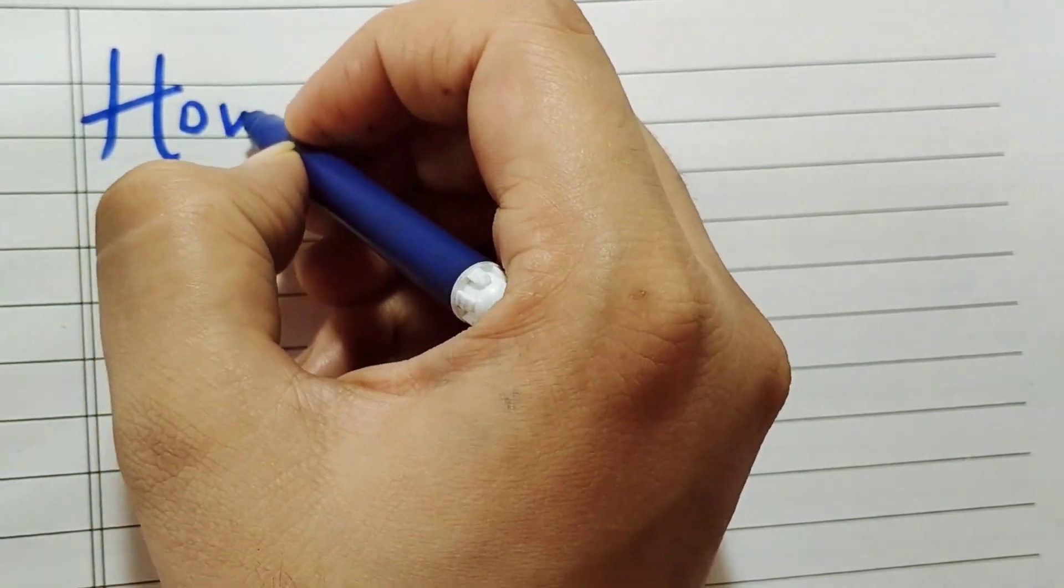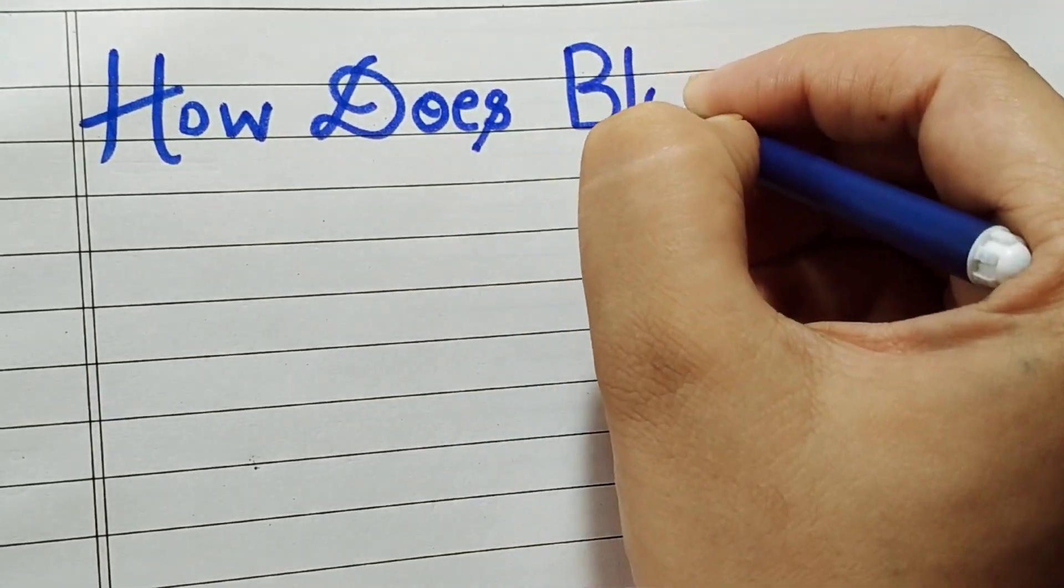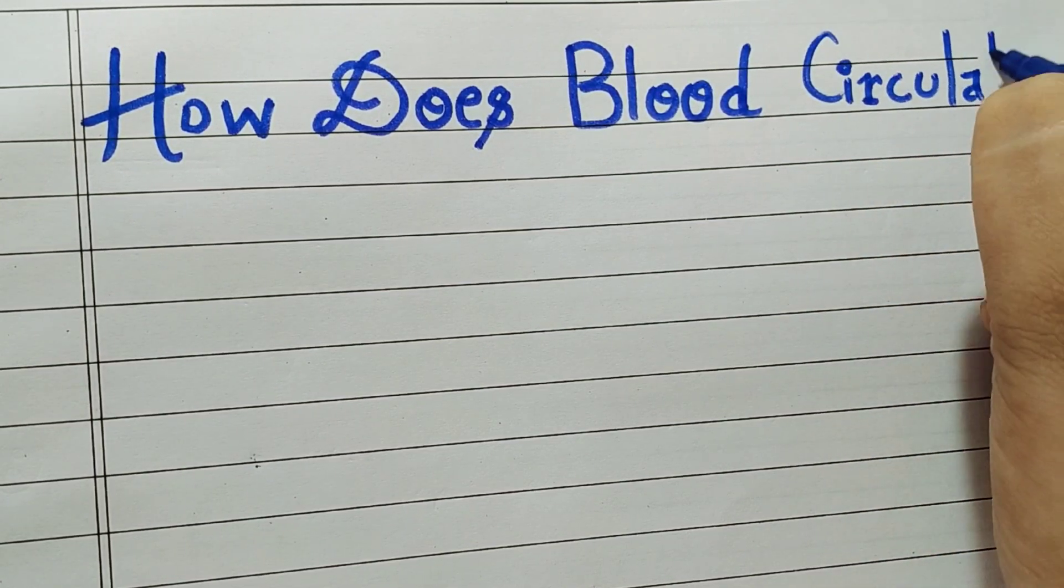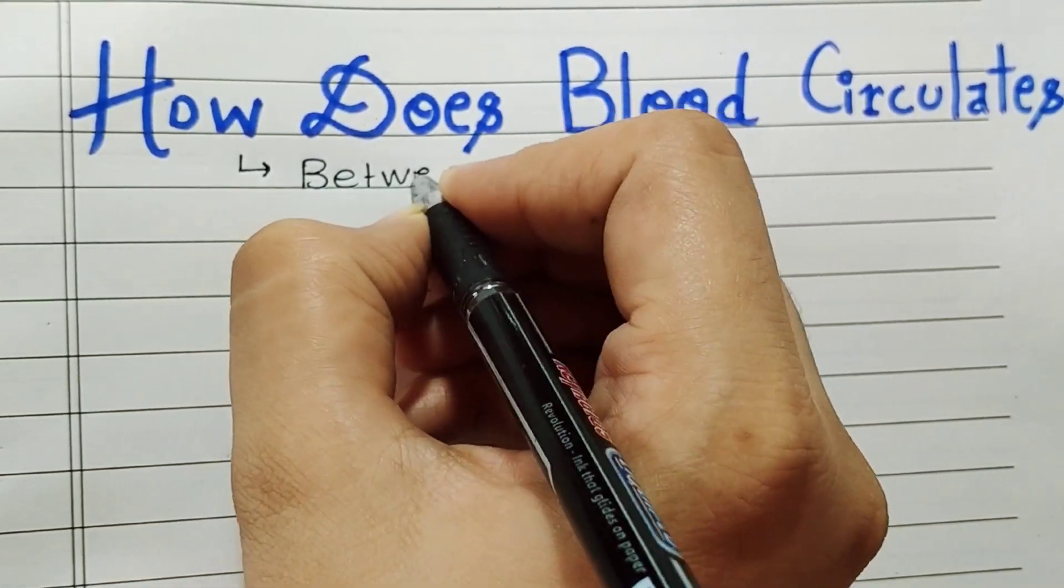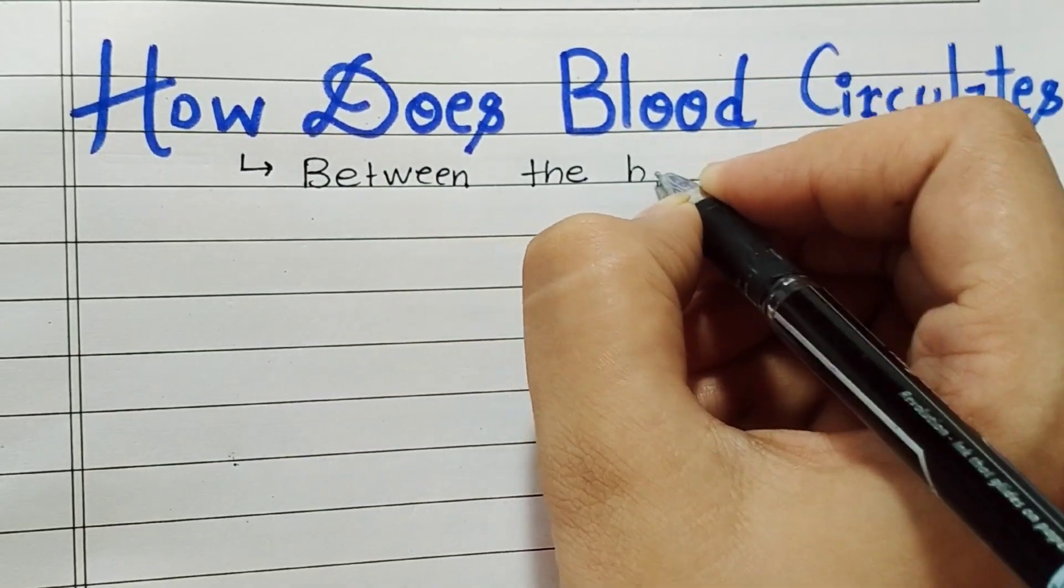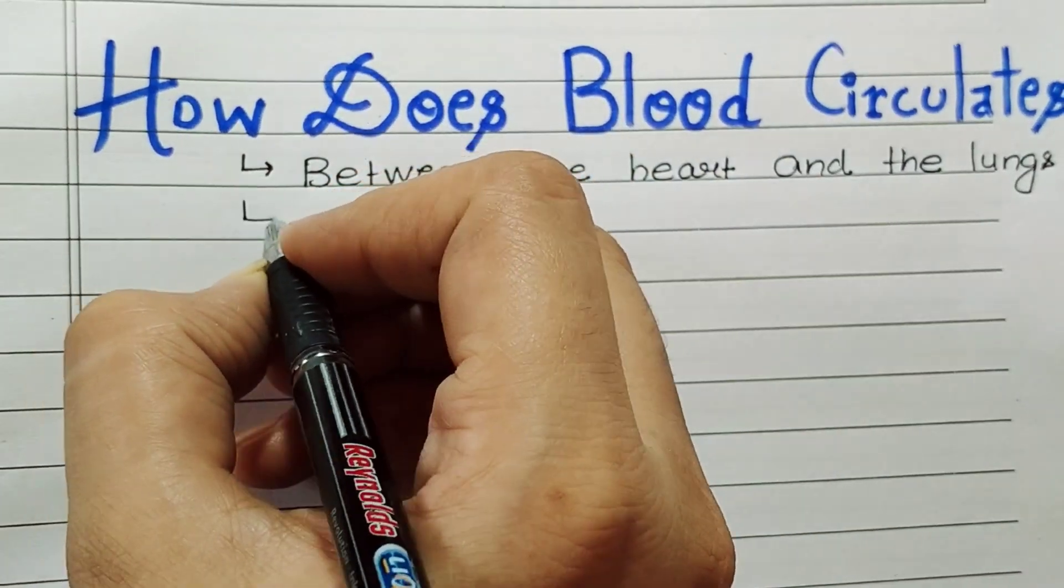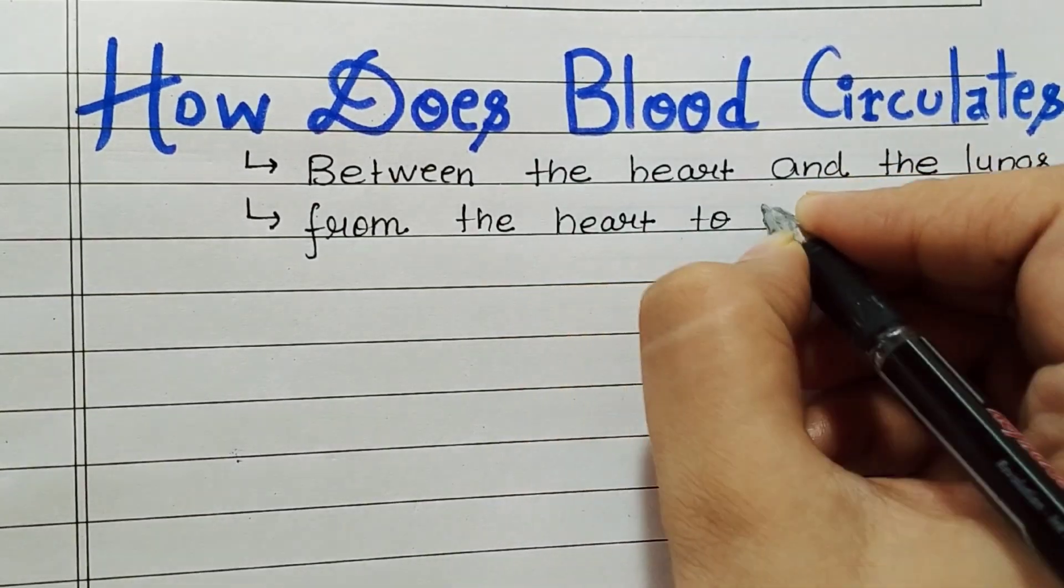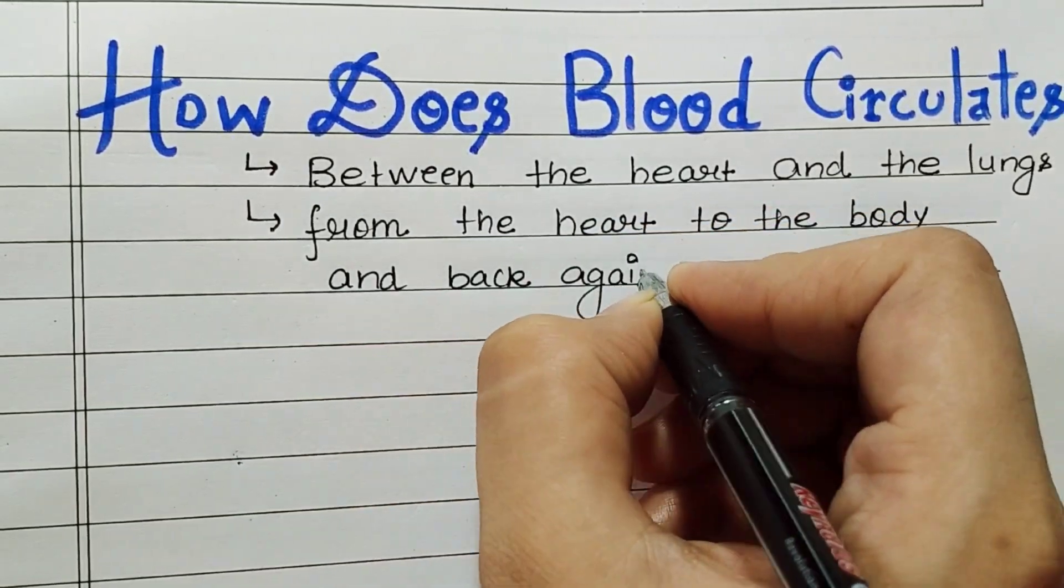Hello everyone, welcome back to our channel. Today's questions are: First, how does blood circulate between the heart and lungs? Second, how does blood circulate from the heart to the body and back again? So let's get started.